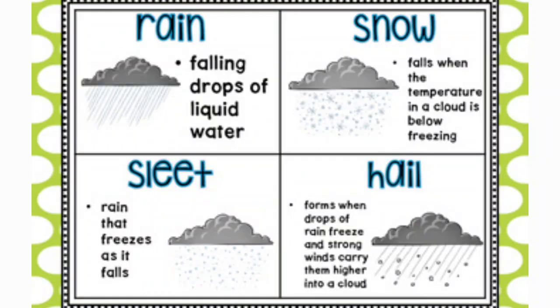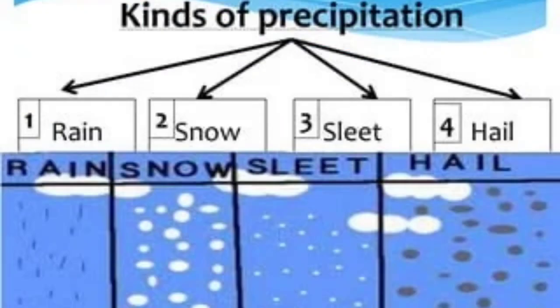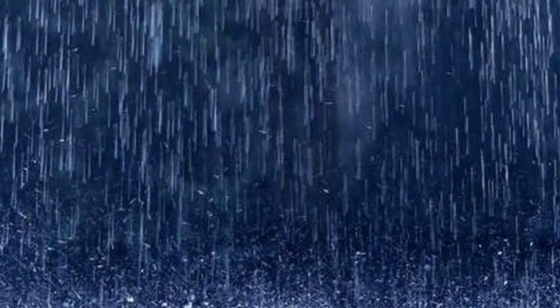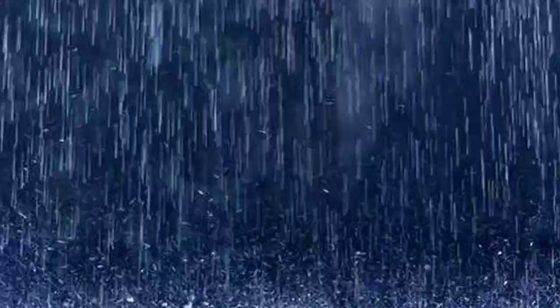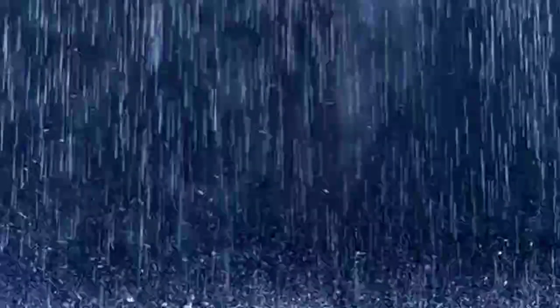Precipitation can be in the form of rainfall, snowfall, sleet, or hailstones. When the precipitation is in the form of water droplets, it is called rainfall.